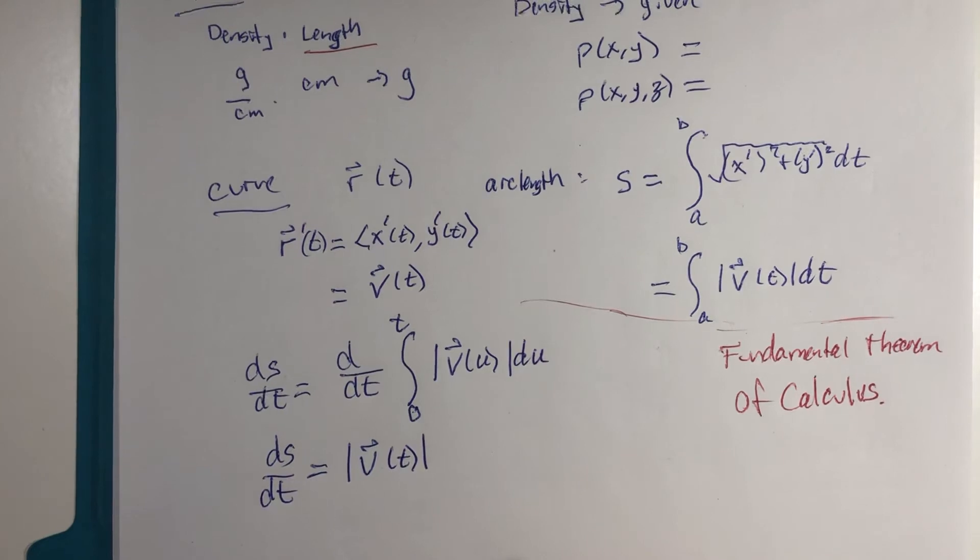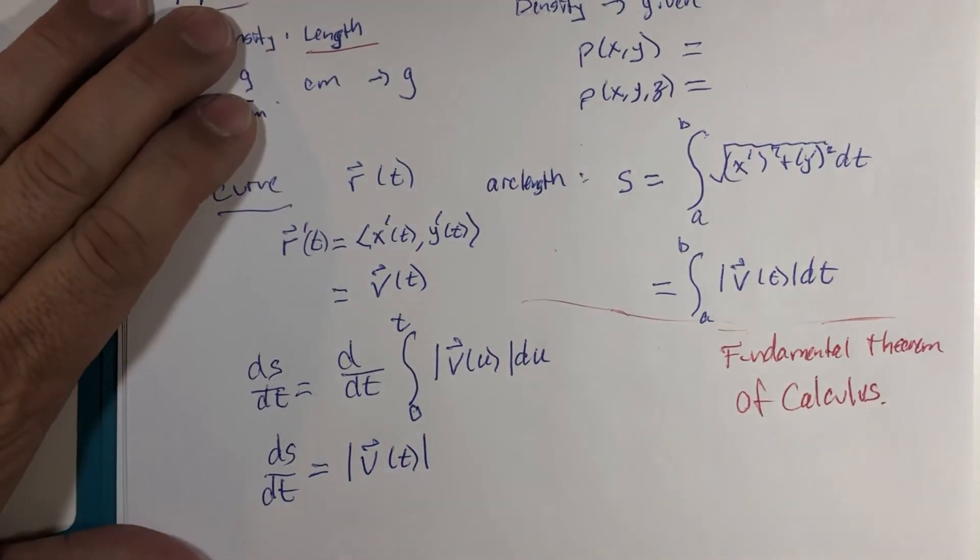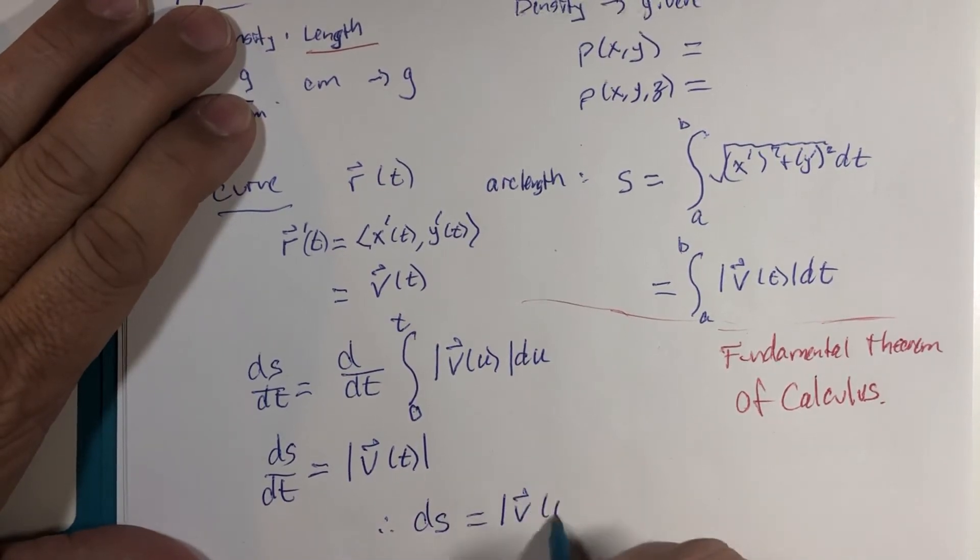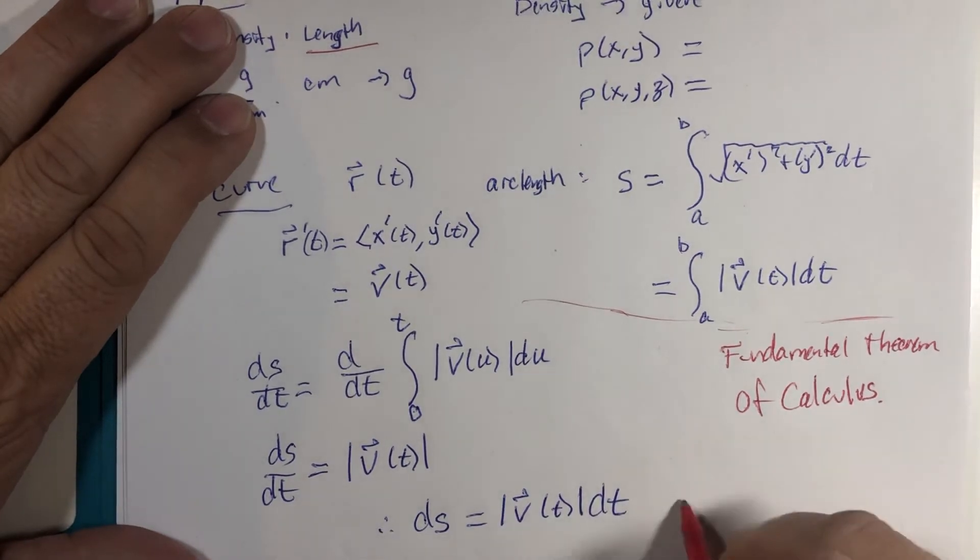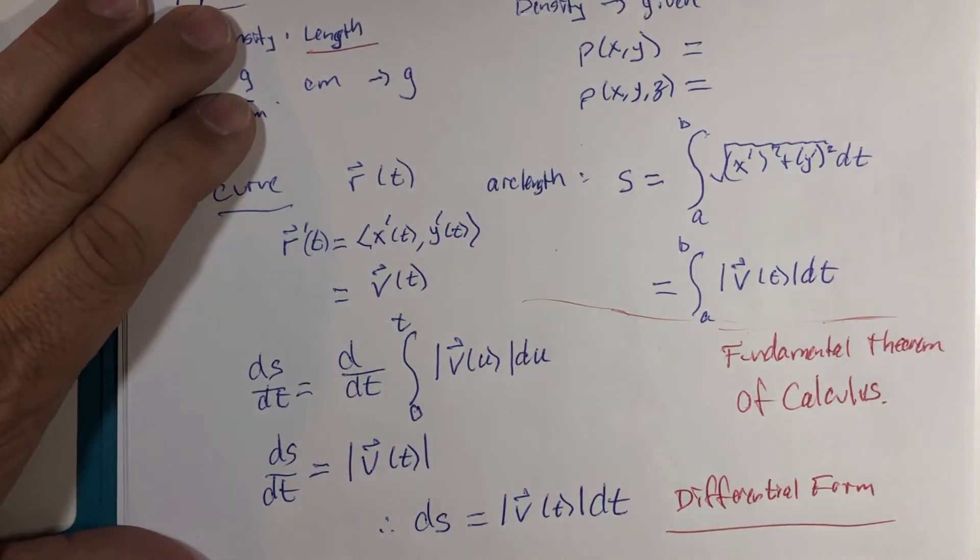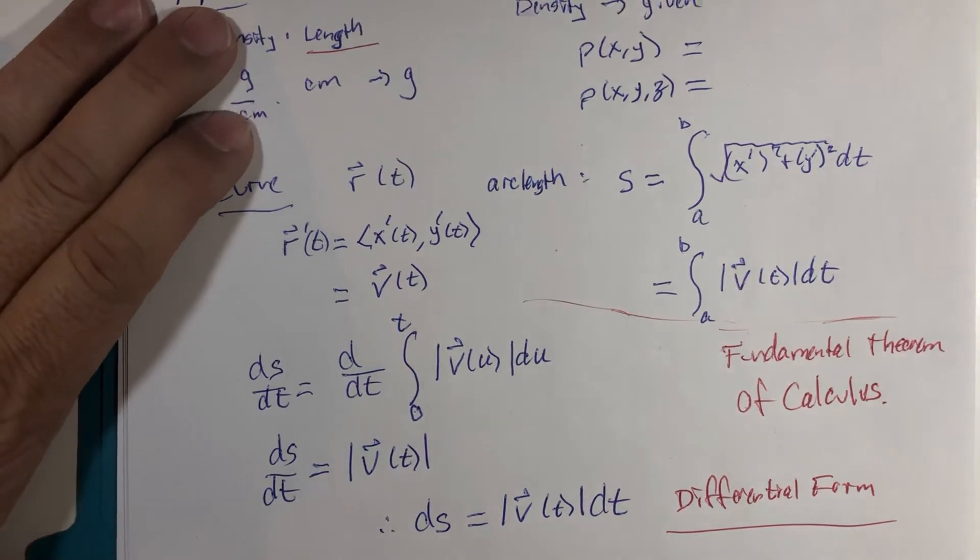What that gives us is that ds is equal to magnitude of velocity vector dt. This would be called the differential form, which we have used also in this course in previous experiences.